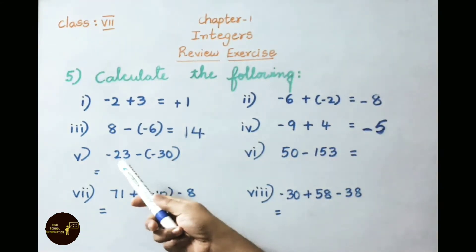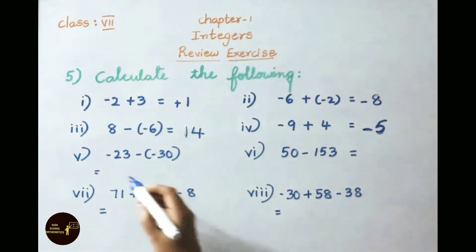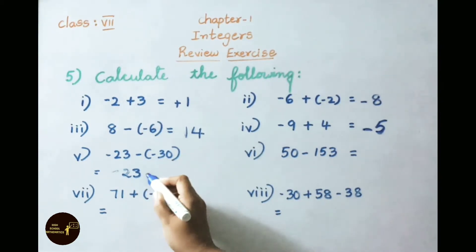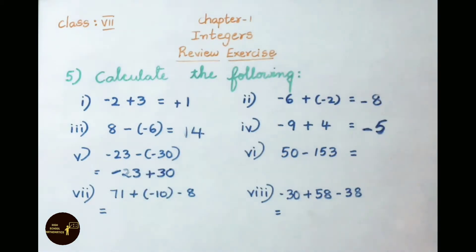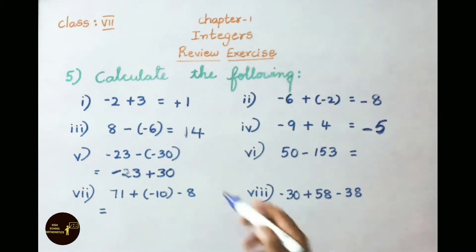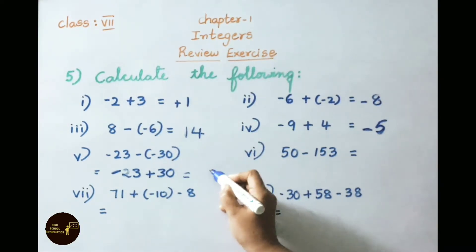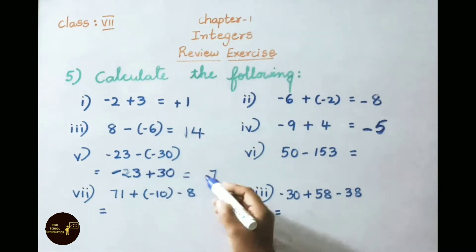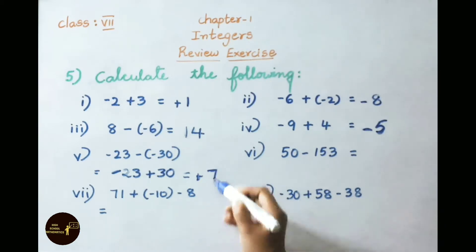See now the fifth sum: minus 23 minus of minus 30. Write it as minus 23 plus 30. Opposite sign is there, so we have to do subtraction. 30 minus 23 equals 7. Here 30 is greatest and its sign is plus, so the answer is plus 7.